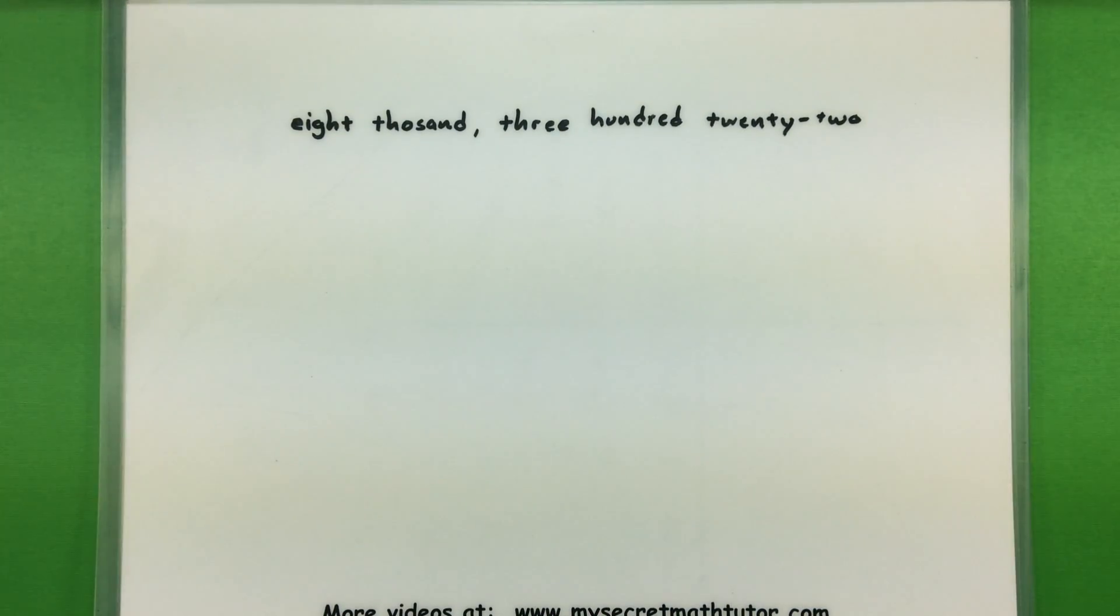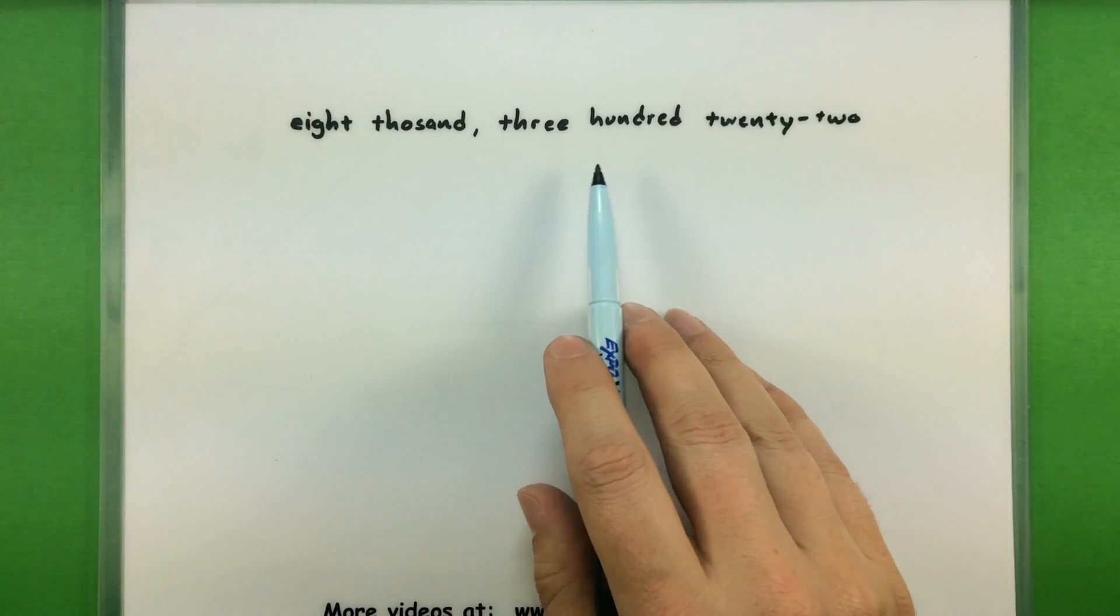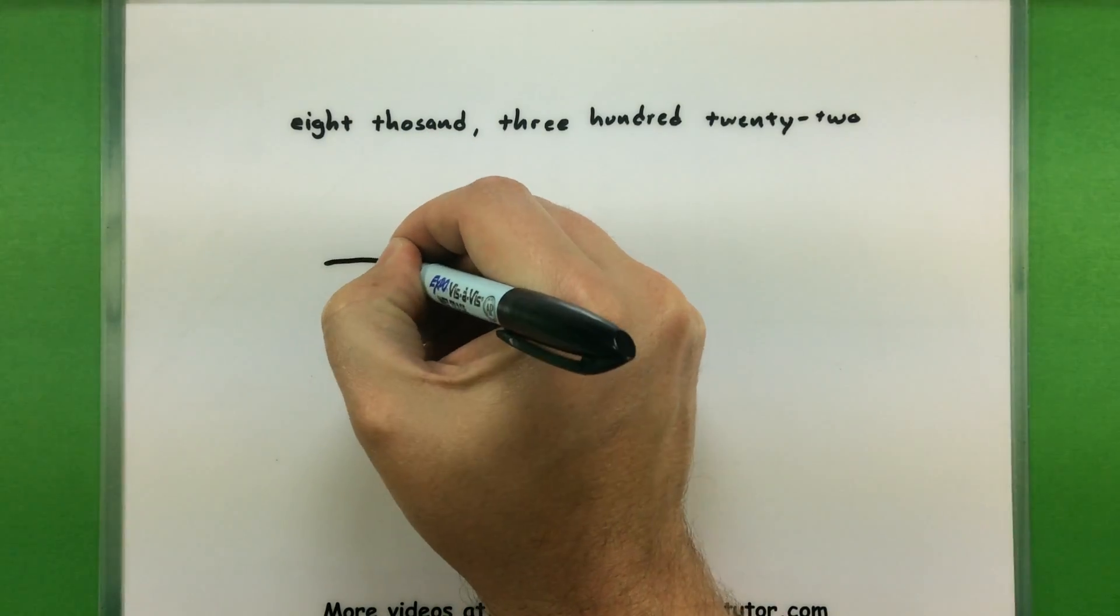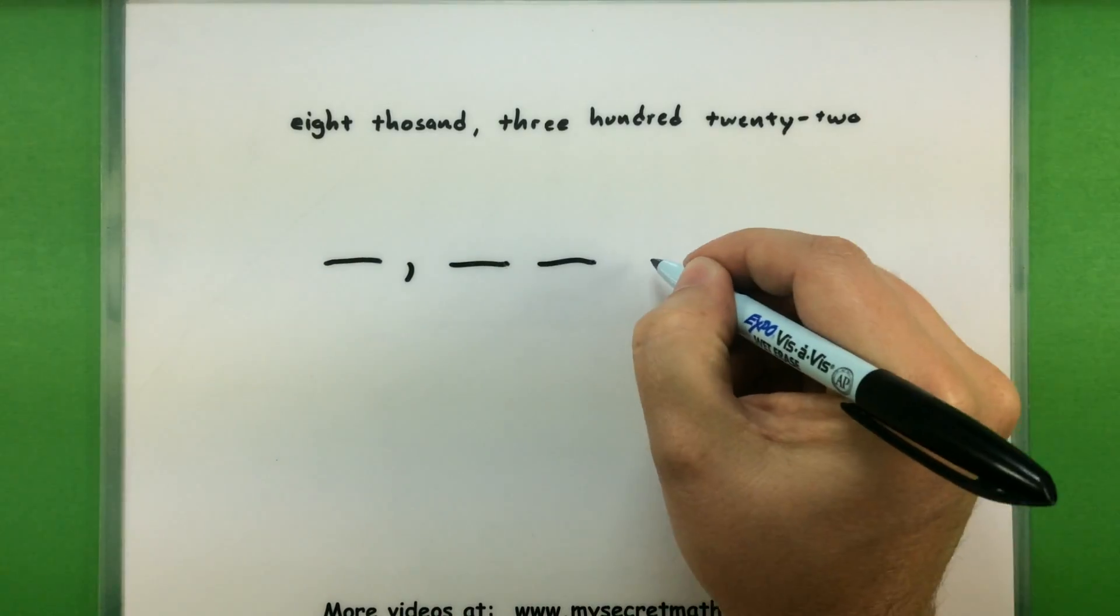For this first example, we're going to convert 8,322 into a numerical value. So what I want to do is look for the largest place value in here, and then essentially make sure I have a digit for all the other place values as I work my way down. So I have 8,322. Largest one is in the thousands place. So I have my thousands, hundreds, tens, and ones.